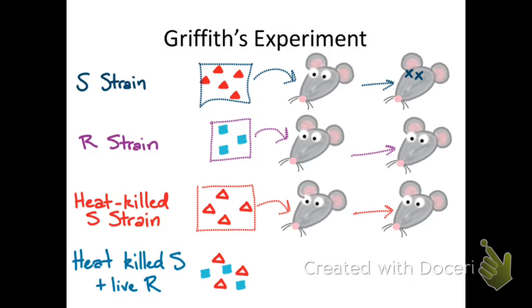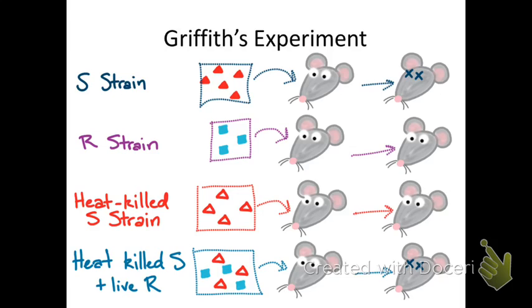But when he mixed the heat-killed S strain with live versions of the R strain and injected that into mice, that also killed the mice. Two things that alone were harmless together were deadly. And so he predicted that there was some sort of material passed between these two things that allowed it to develop this lethal quality.